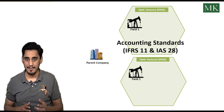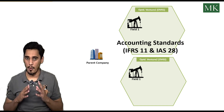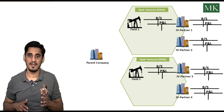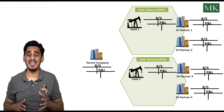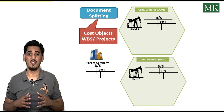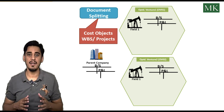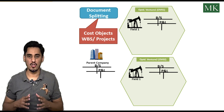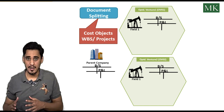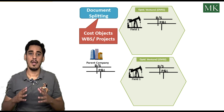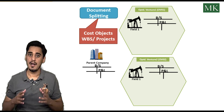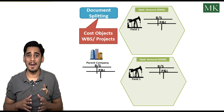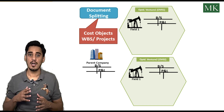As per accounting standards IFRS 11 and IAS 28, it is the responsibility of the parent company or operator to create and provide financial statements at both the joint venture level and joint venture partner level, along with the company code. For joint venture level financial statements in SAP S/4HANA FI module, we activate document splitting and maintain the cost object used for the joint venture — such as WBS element or project — as the document splitting characteristic in the FI module configuration.